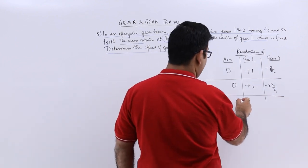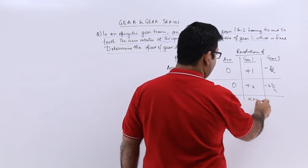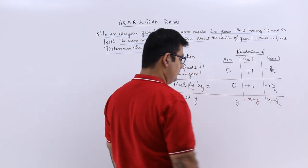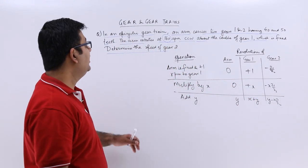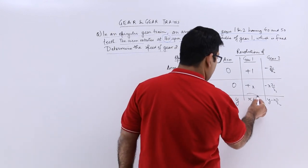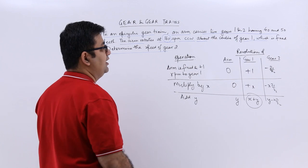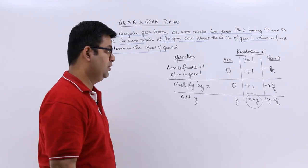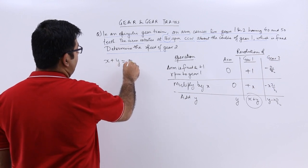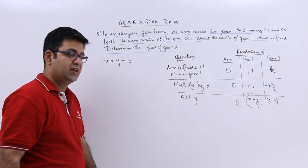You will get y, x plus y, y minus x into z1 by z2. Now the gear 1 is fixed. So the total motion of this gear 1 would be 0. So you will have x plus y is equal to 0.